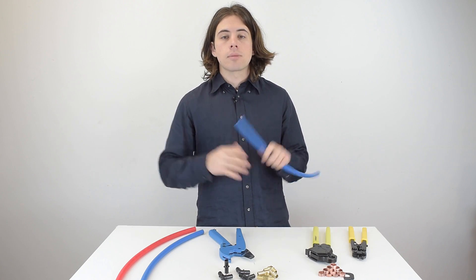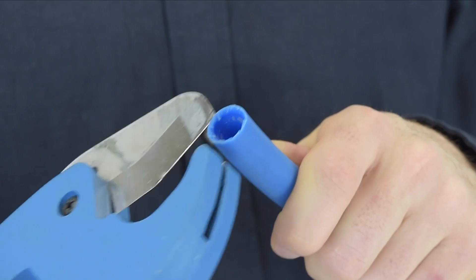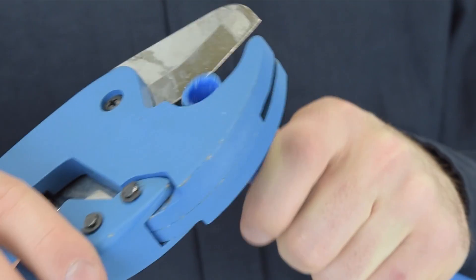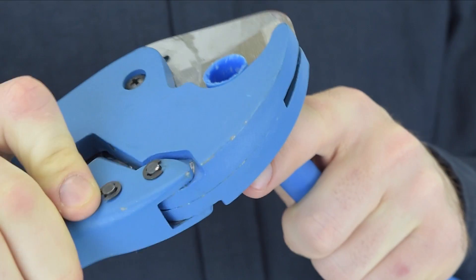The first step in making a crimp connection is to make sure you have a smooth and even cut. Take your PEX cutter to the pipe and make sure it's lined up 90 degrees and make your cut.